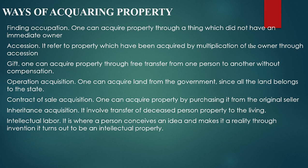Another method of acquiring property is through accession. Accession refers to properties which have been acquired by multiplication of the owner's share. For instance, property acquired by an owner through multiplication of shares or interest rate for money which has been stored in a fixed bank account.